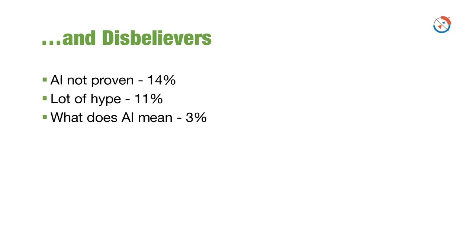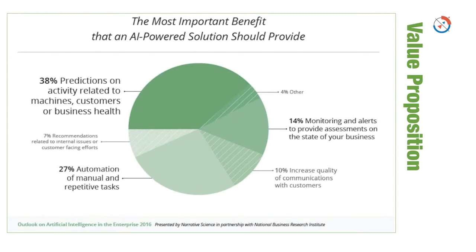Of course there are also those who just don't believe in AI — fortunately not so many. 14 percent feel artificial intelligence is not proven, 11 percent think it is a lot of hype, and about 3 percent go to a more fundamental level asking what artificial intelligence even means. So although this technology has been evolving since the 1950s and has now matured to an extent, and deep learning looks very promising, you still have people who don't believe it or are not convinced they need to get into it.